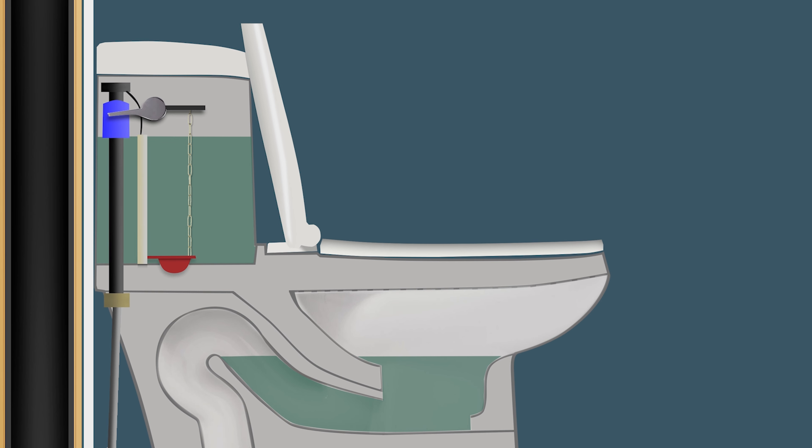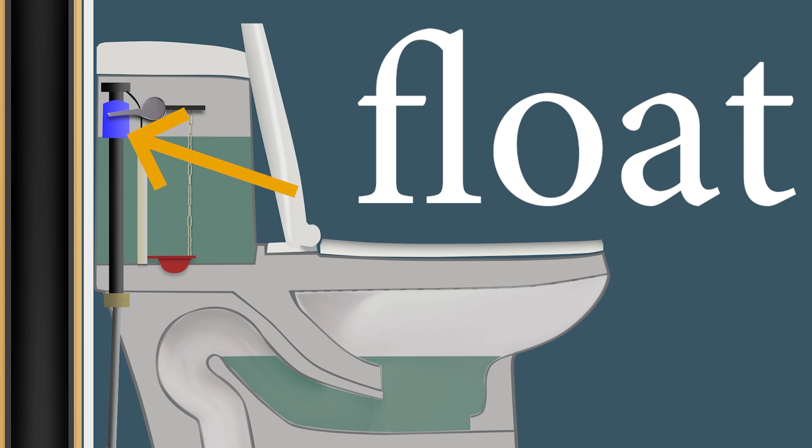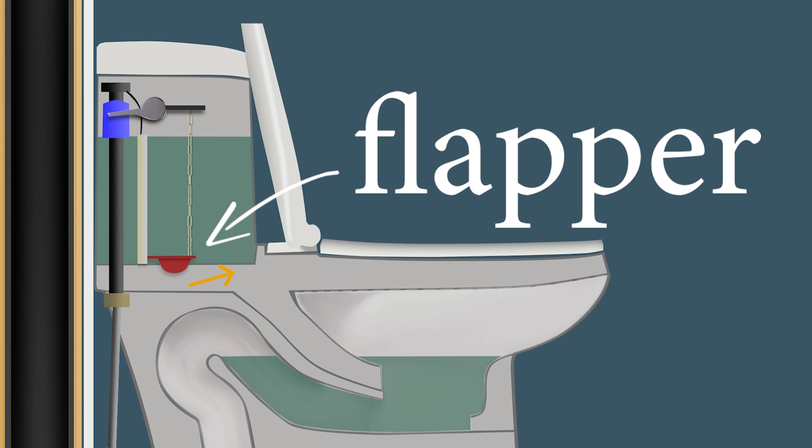Starting from the tank, here is where the water is kept. Typically 6 liters on your toilets and it's controlled with this float right here.